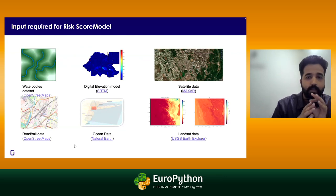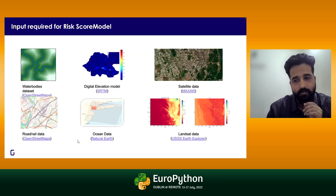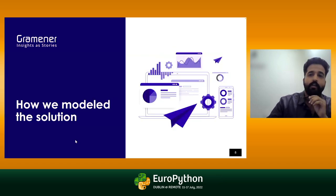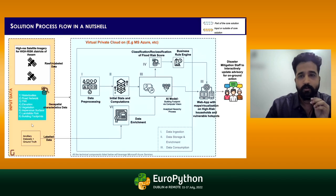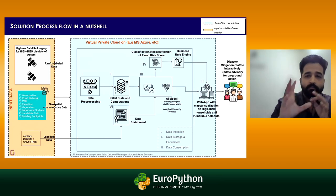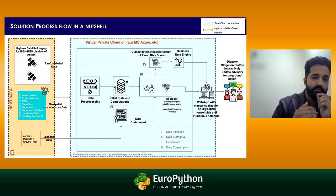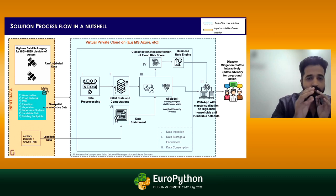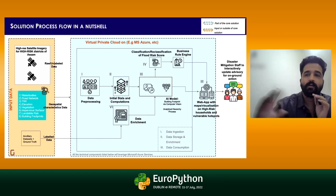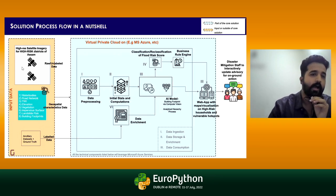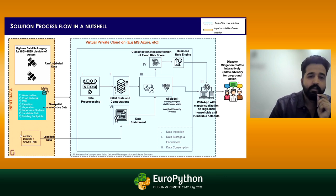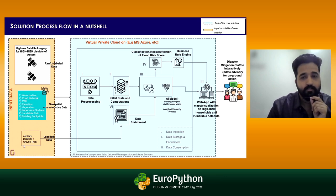Now, how we modeled it: I will present a simple flow explaining exactly what modeling we are doing. This flow covers the entire application, skimming through the main things: high-resolution satellite imageries, the different parameters mentioned, and any ancillary datasets and ground truthing.